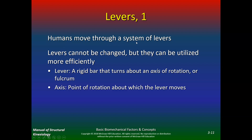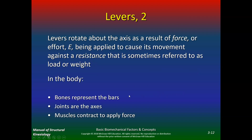Humans move through a system of levers. Levers cannot be changed, but they can be utilized more efficiently. A lever is a rigid bar that turns about an axis of rotation, or fulcrum, and the axis is the point of rotation about which the lever moves. Levers rotate about the axis as a result of force, or effort, being applied to cause movement against a resistance, sometimes referred to as the load. In the body, the bones represent the bars, the joints are the axes, and the muscles contract to apply the force.